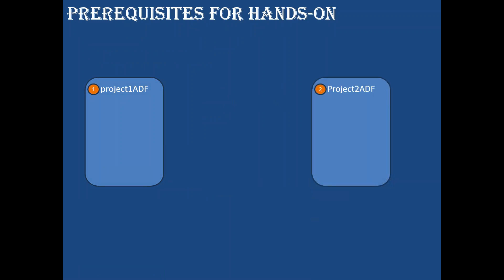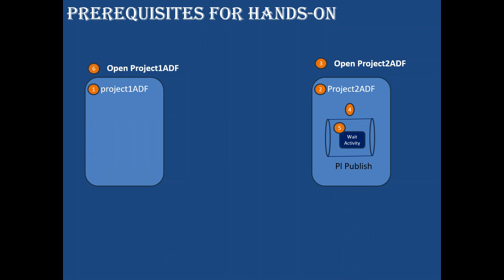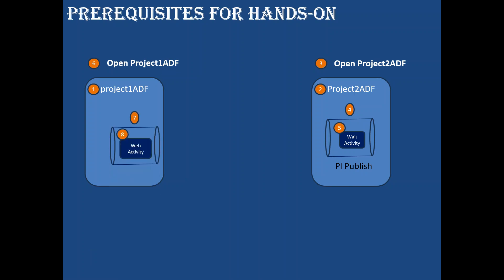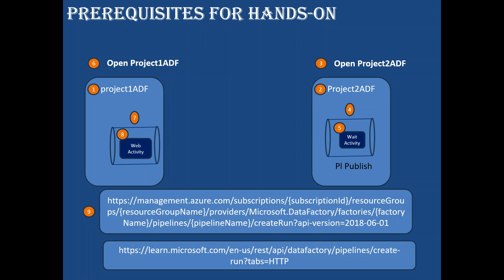Step 1: create Project 1 ADF. Step 2: create Project 2 ADF. Step 3: open Project 2 ADF. Step 4: create a pipeline. Step 5: use the wait activity in the pipeline and publish it. Step 6: open Project 1 ADF and add a pipeline there, then use the web activity to call the pipeline in Project 2 ADF.